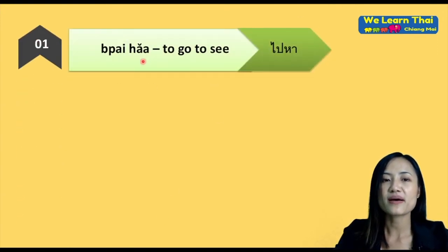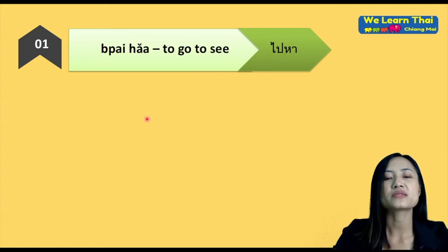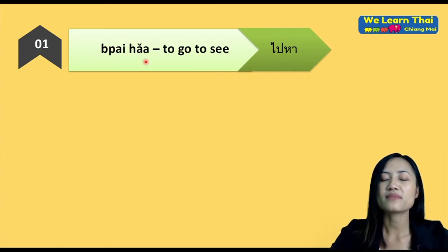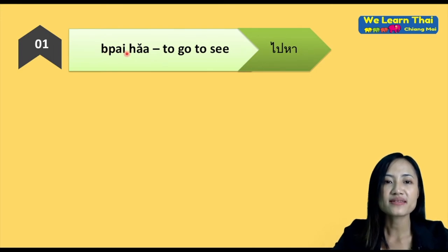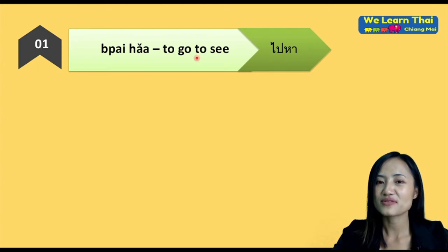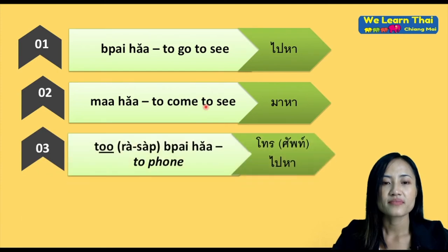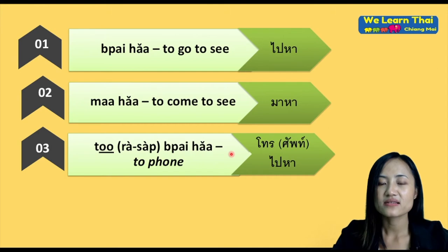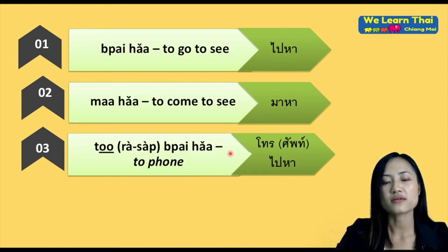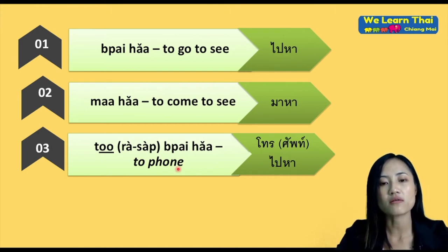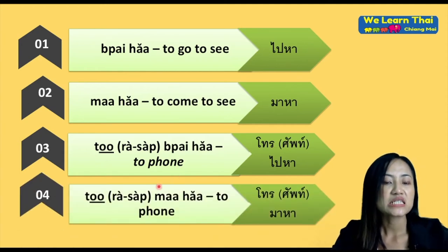Here we are talking about the word 'go somewhere' and 'go meet someone'. 'Pai Ha' means go to see someone, and 'Pai Ma Ha' means come to see someone. Also: to call someone, to phone someone.